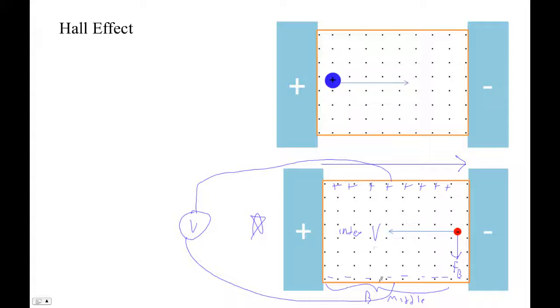If it's out of the page, the top will be positive and the bottom negative. And if it's into the page, if it's out of the page, the top would be positive and the bottom would be negative. And if it's into the page, it would be the opposite. But I can also read the strength of the magnetic field by the magnitude of that voltage.